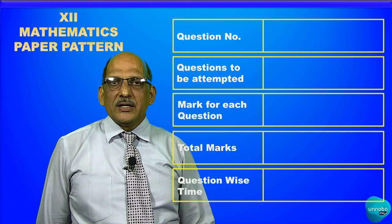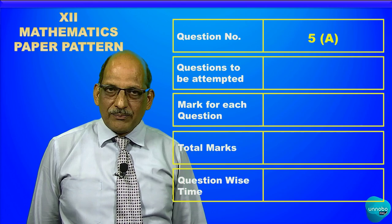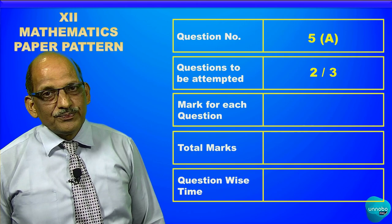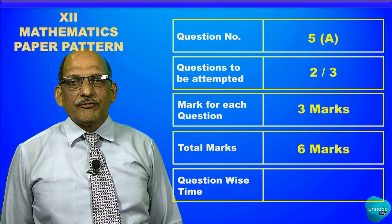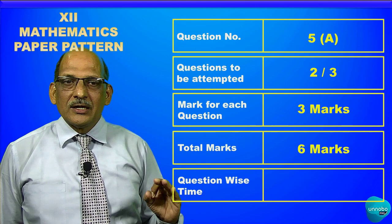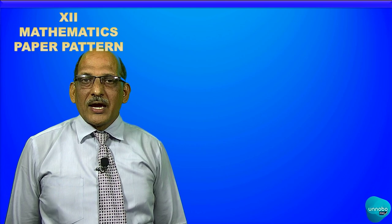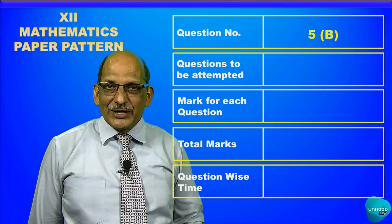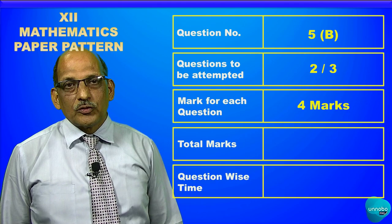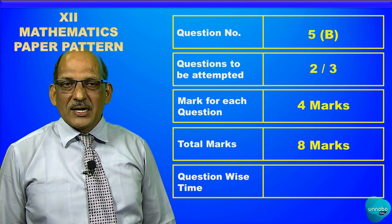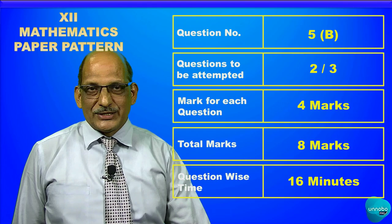Then in question number five, there will be two sub-questions: 5A and 5B. In 5A, students have to solve two out of three questions, each carrying three marks, so total marks for question number 5A will be six marks and time to complete it will be 12 minutes. In question number 5B, students have to solve two questions out of three, each question carrying four marks, so total marks for question number 5B will be eight marks.